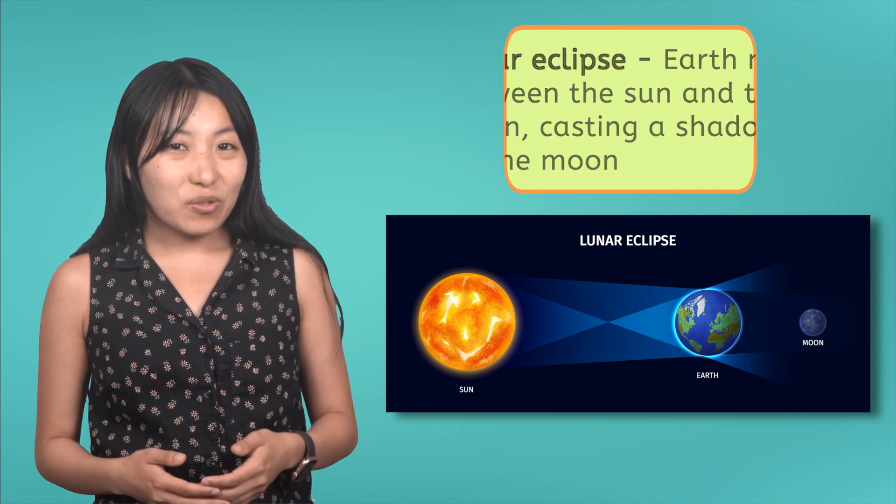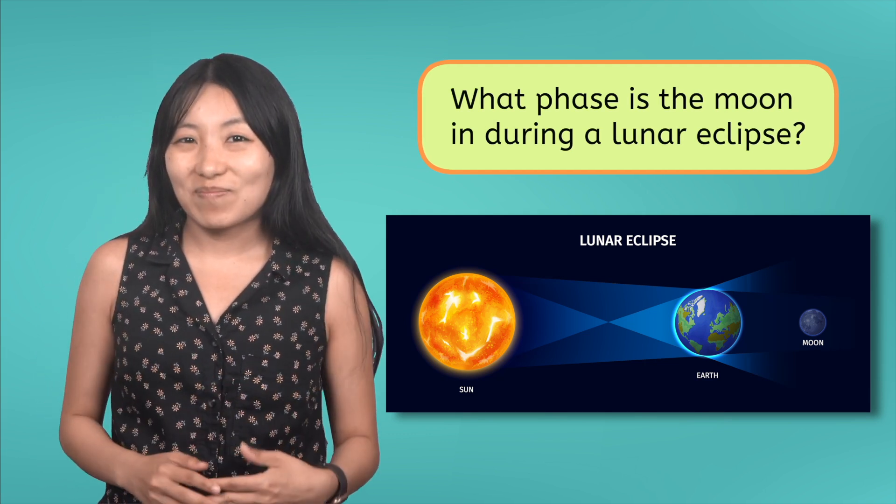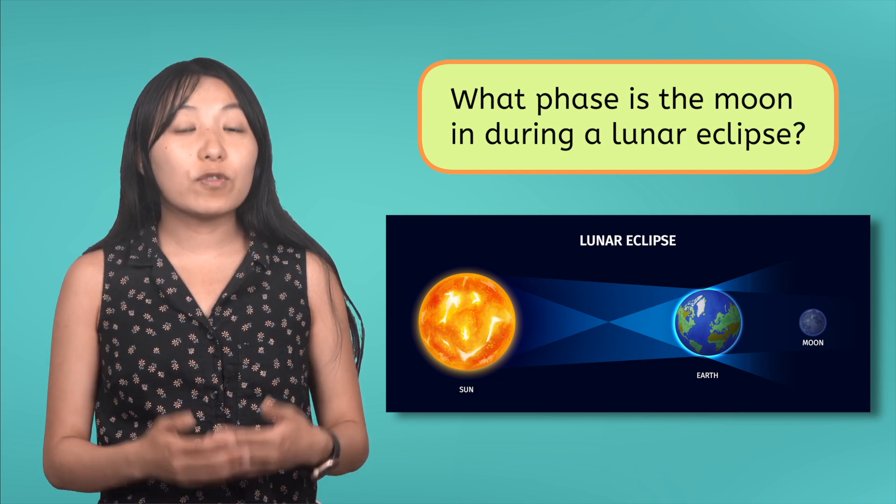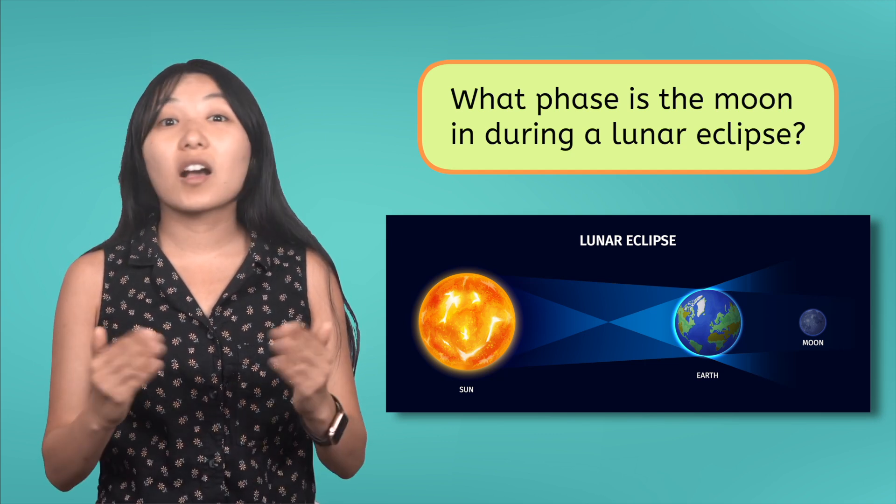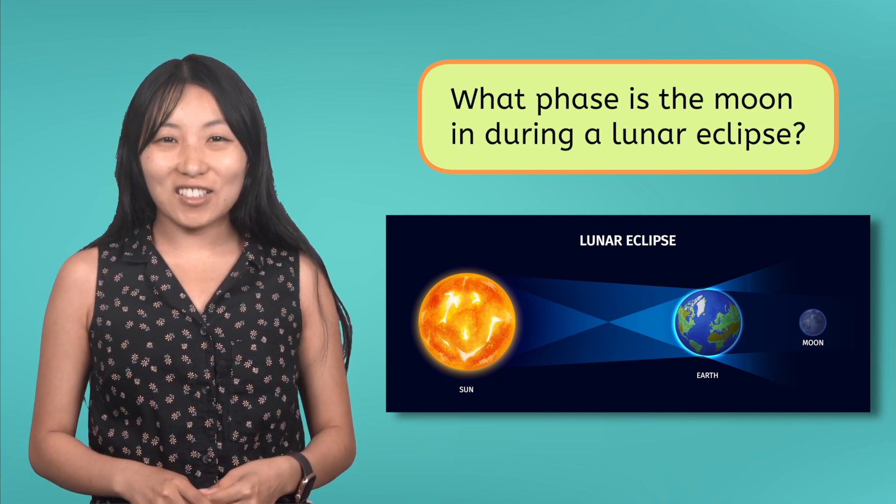But here's a question for you. What phase is the Moon in during a lunar eclipse? Here's a hint. The Moon has to be on the opposite side of Earth from the Sun, so it can be fully illuminated, and then covered. Take a look at the diagram, pause the video, and record your guess in your guided notes.